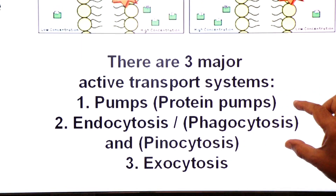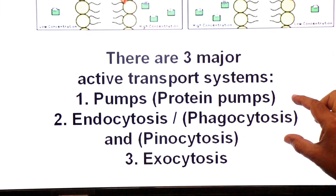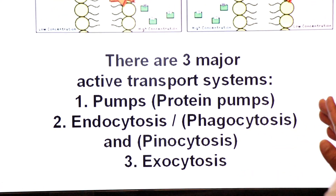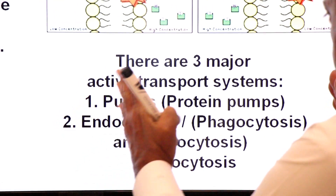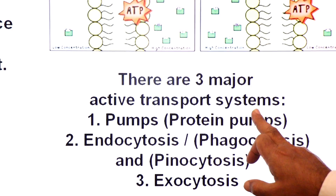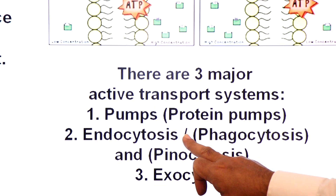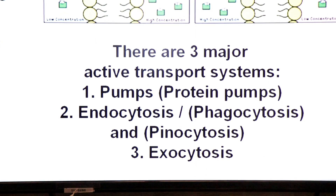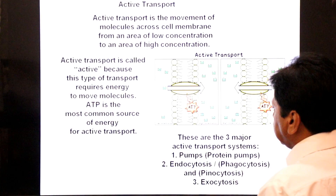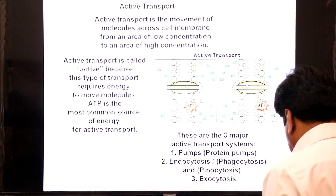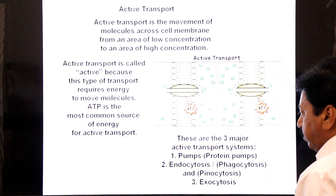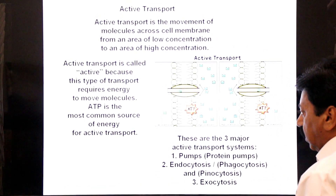There are three major active transport systems: first, pumps — also called protein pumps; second, endocytosis, which includes phagocytosis and pinocytosis; and third, exocytosis. These are the three examples of active transport we are going to study.